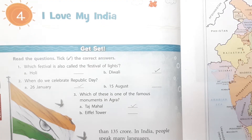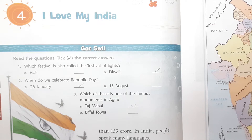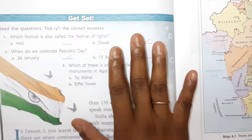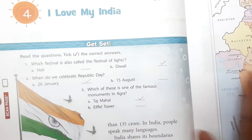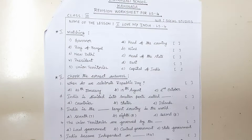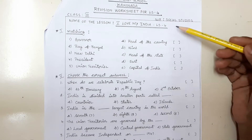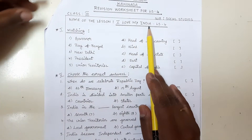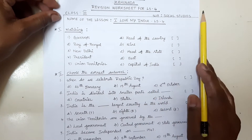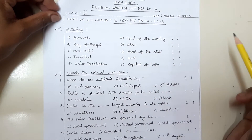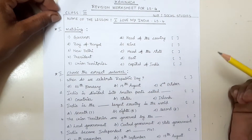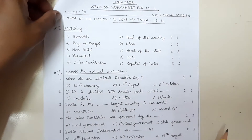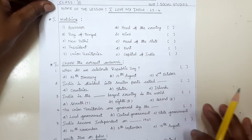For Assessment 2, the syllabus for Social is lessons four, five, and seven. I prepared one worksheet based on lesson four. This worksheet is based on the lesson 'I Love My India.' For the first assessment we completed lessons one, two, and three with worksheets. Same way, for lesson number four I prepared one worksheet — go through it.